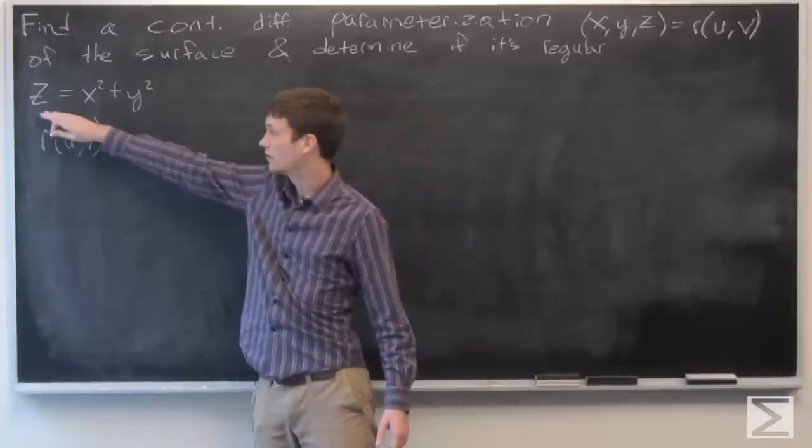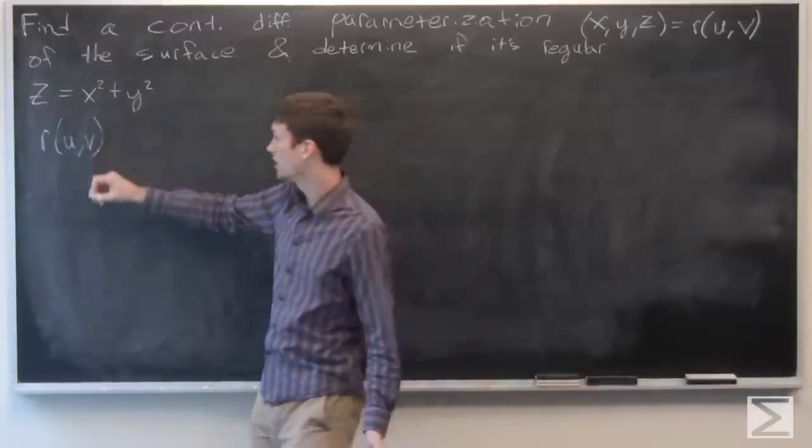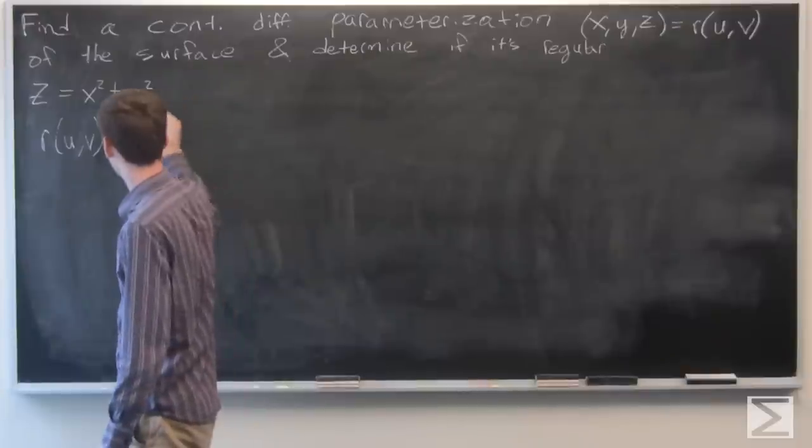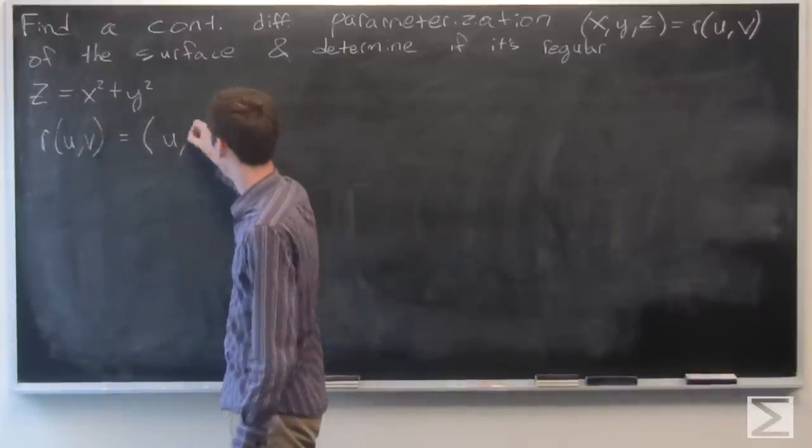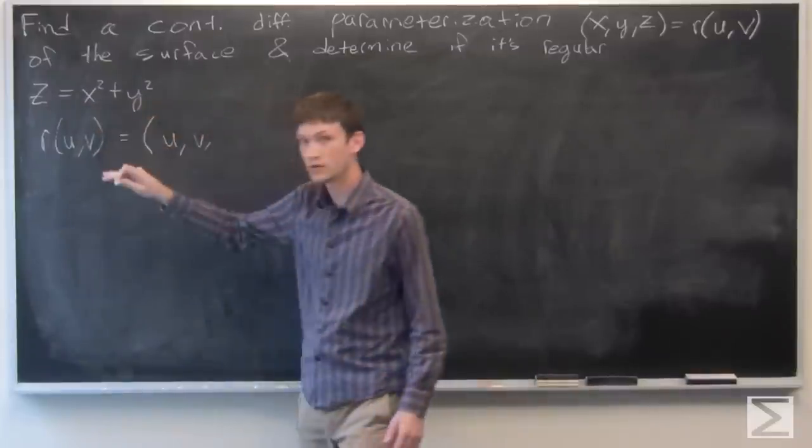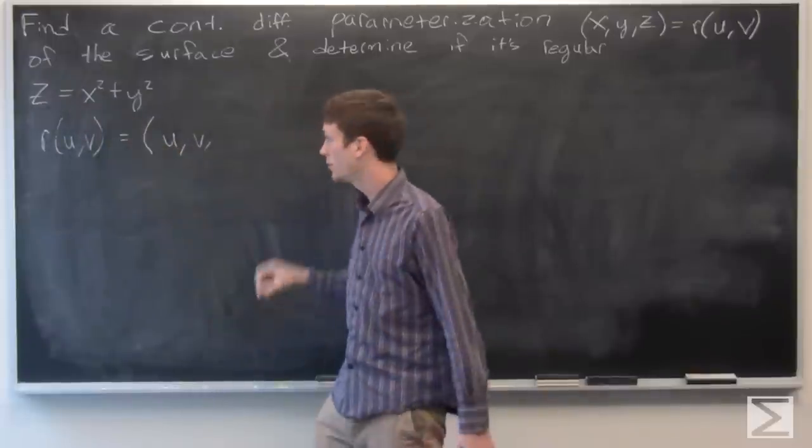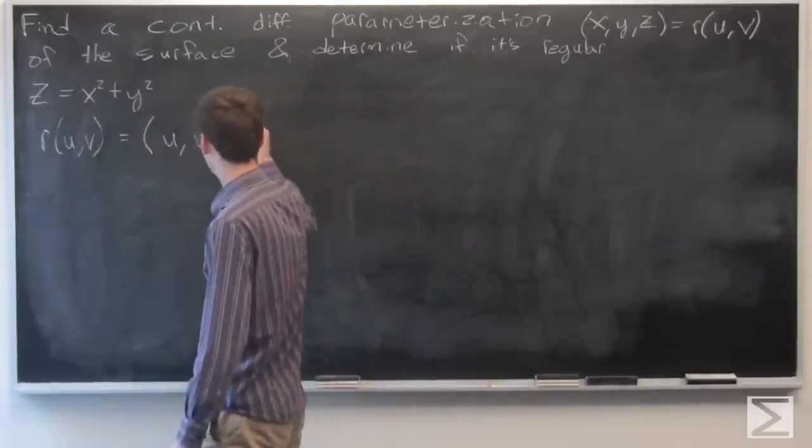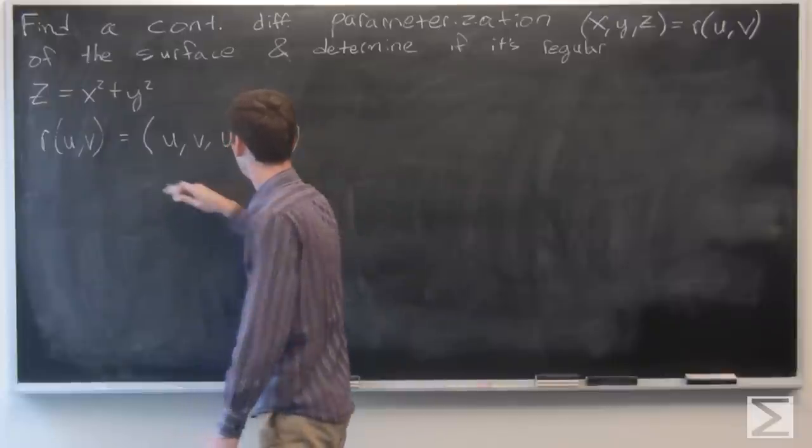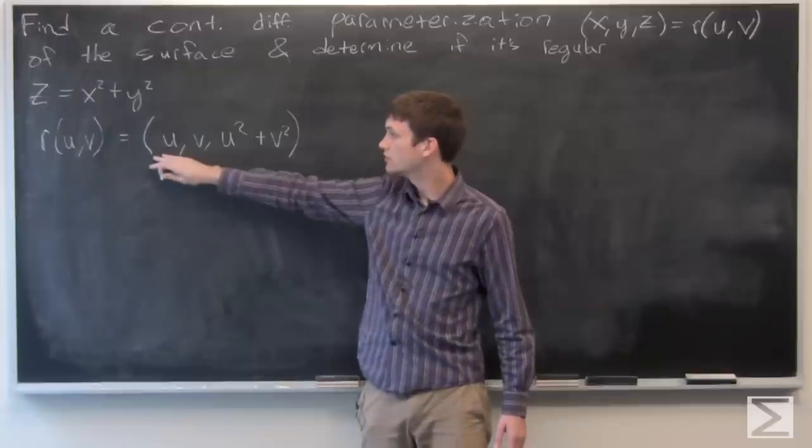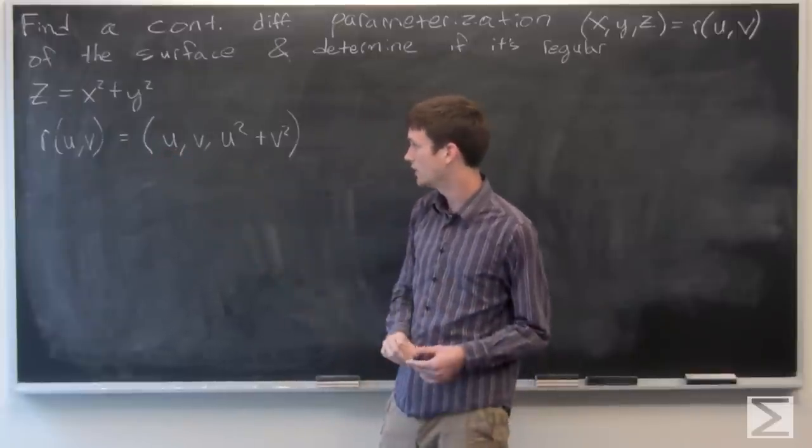We know that z is equal to x squared plus y squared. So we can just let x equal to u, y equal to v, and then plug in for our z component, which is u squared plus v squared, using our new terms for x equals u and y equals v.